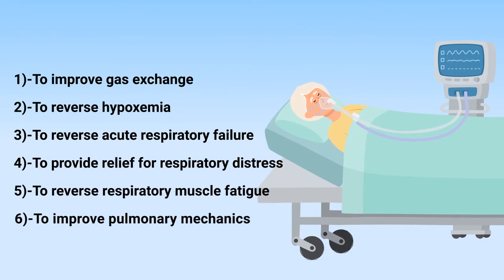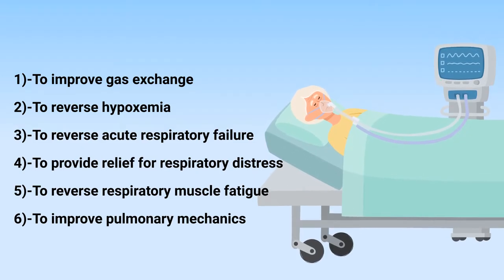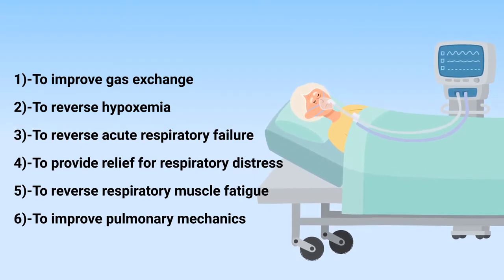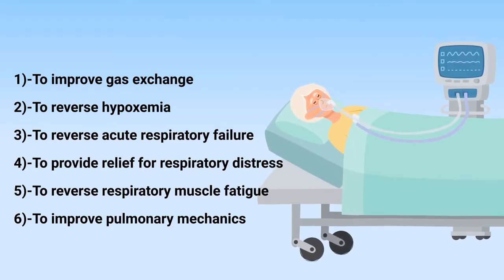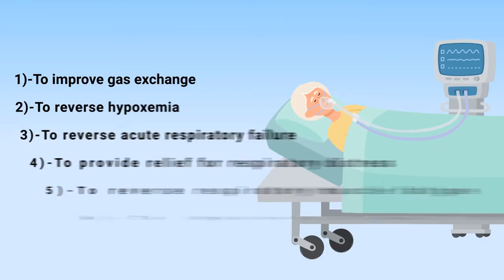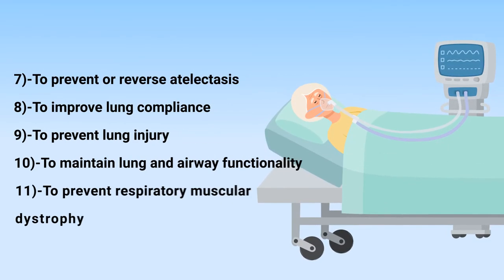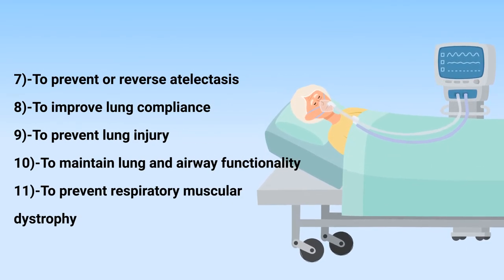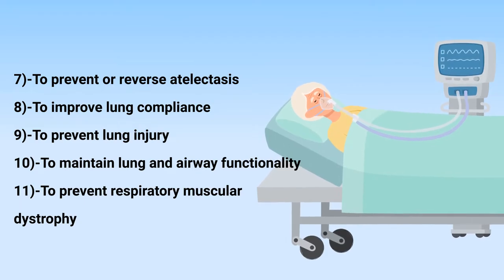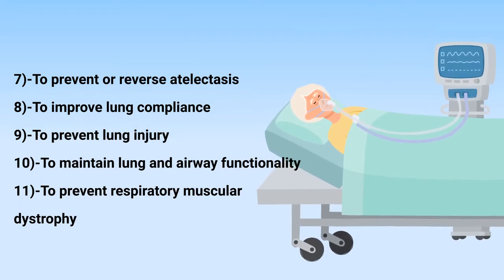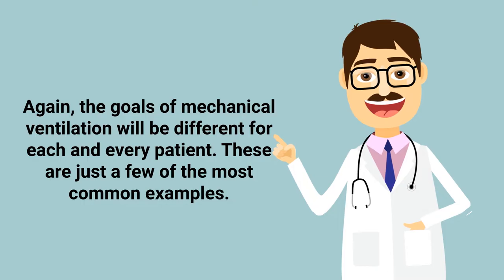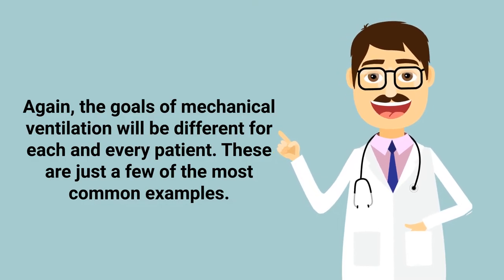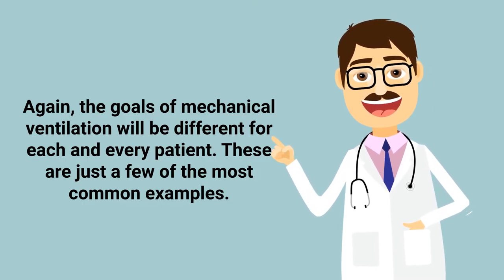The goals include: to improve gas exchange, to reverse hypoxemia, to reverse acute respiratory failure, to provide relief for respiratory distress, to reverse respiratory muscle fatigue, to improve pulmonary mechanics, to prevent or reverse atelectasis, to improve lung compliance, to prevent lung injury, to maintain lung and airway functionality, and to prevent respiratory muscular dystrophy. The goals of mechanical ventilation will be different for each patient — these are just a few of the most common examples.